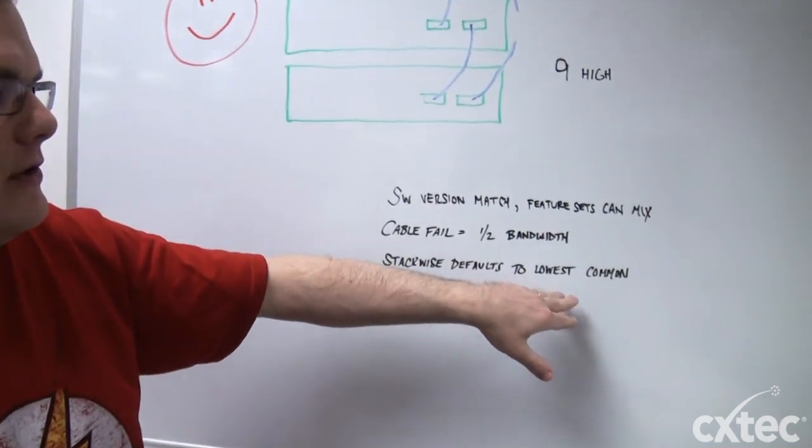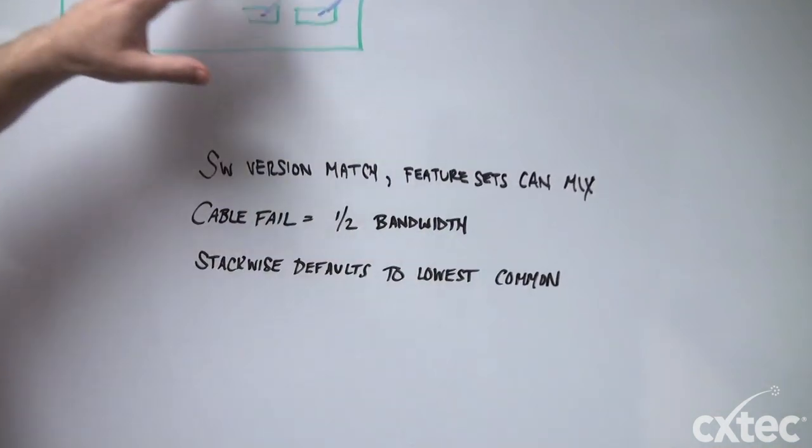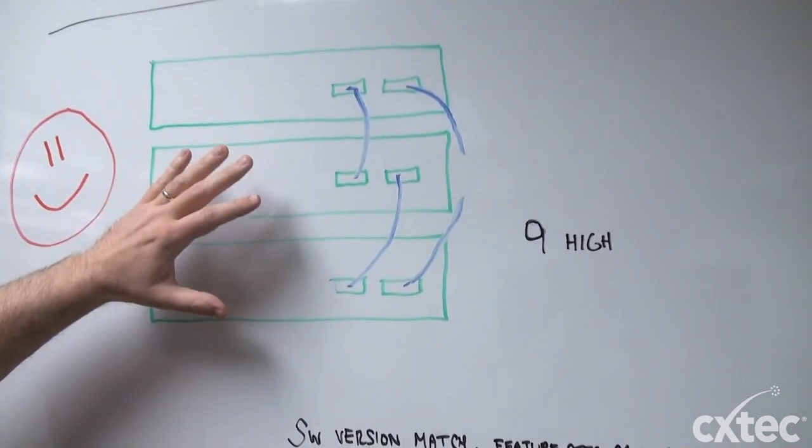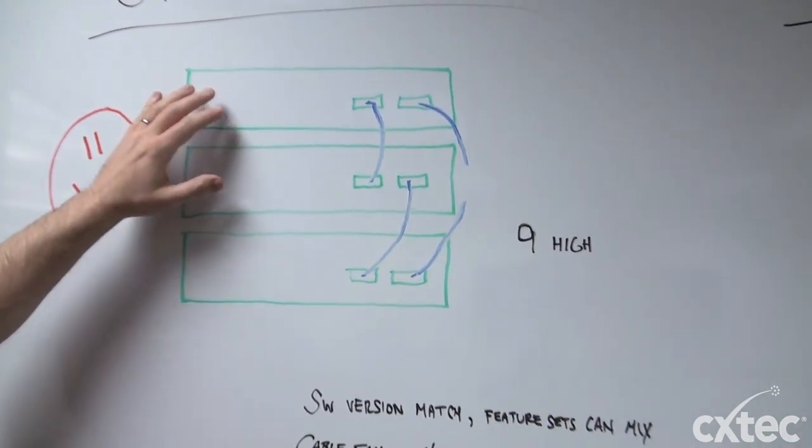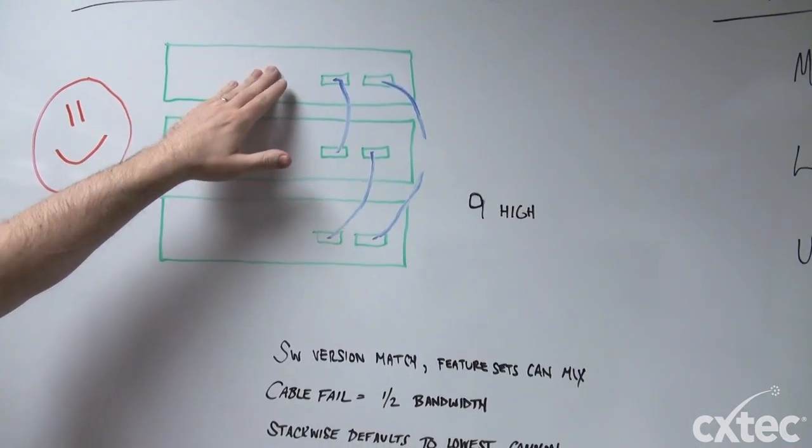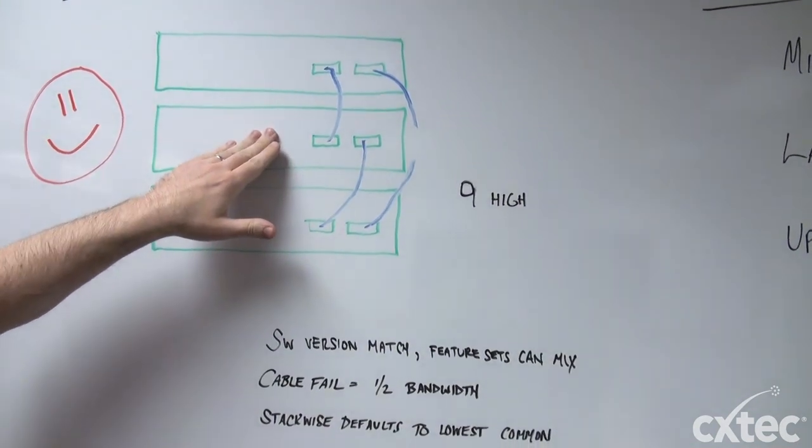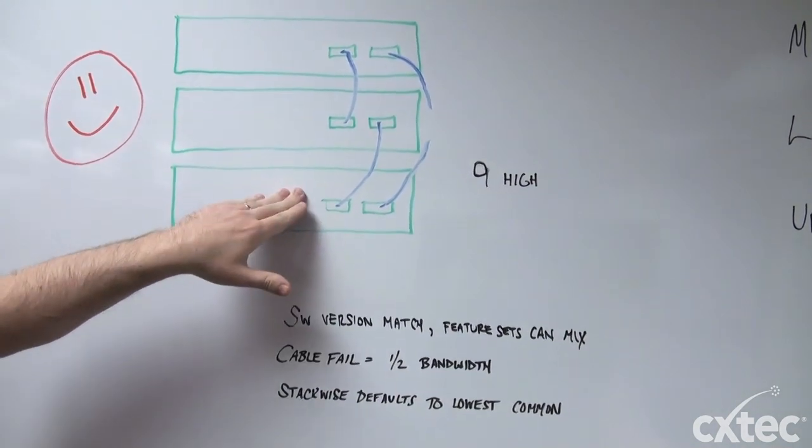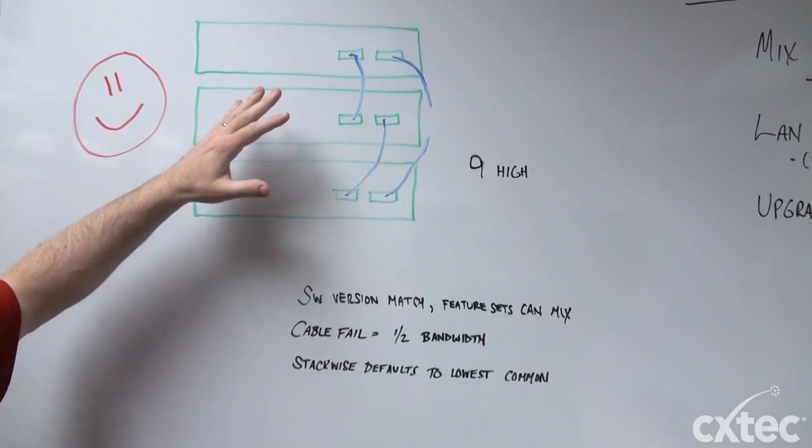And that stack-wise will default to the lowest common denominator. Where that matters is when you have a mix of hardware, which you can do. If you have a 3750, if this were a standard 3750 with a 3750E and an X down here, you can mix that hardware.